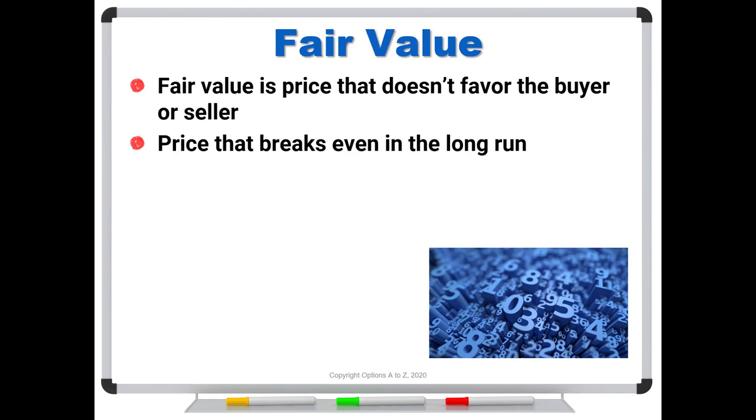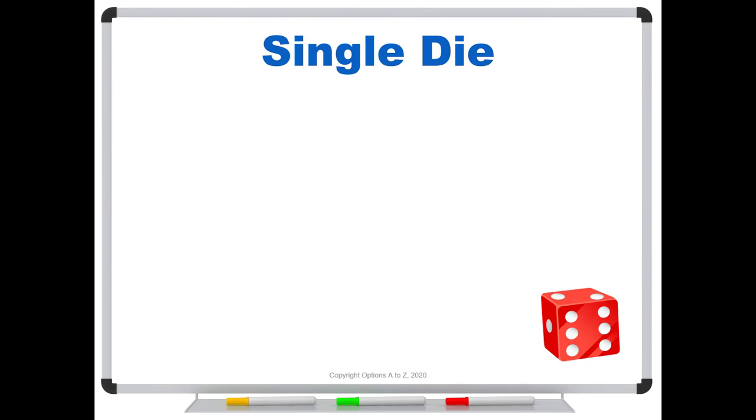So whenever we run a Black Scholes model, that options price that it comes up with is the fair value. And so what that means is that in the long run, you would be expected to just break even. So once again, the whole idea of the Black Scholes model, extremely complicated. And sometimes I think that's what throws traders as they just get so lost in the concept. Well, let's make it simple. We can do exactly the same idea with a single die.